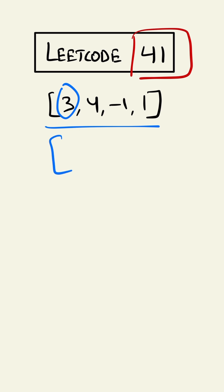So we'll replace it with the number at the second index. So the new array would be minus 1, 4, 3, 1.